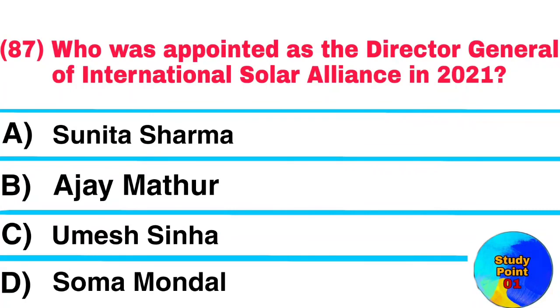Question No. 87. Who was appointed as the Director General of International Solar Alliance in 2021? Answer: Ajay Mathur.